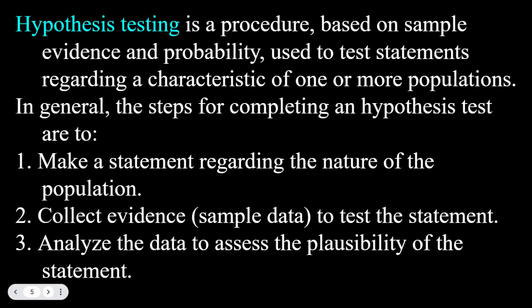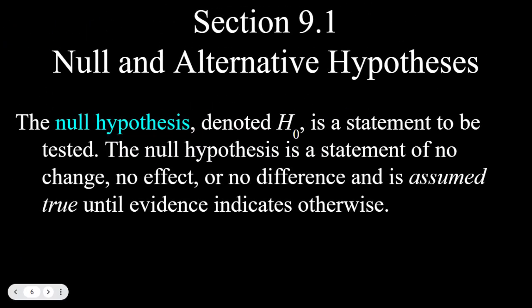The steps for completing a hypothesis test: Number one, we make our statement regarding the nature of the population, which involves two parts. Number two, we collect evidence — we gather sample data to test the statement. Number three, we analyze the data to assess the plausibility of the statement: does that statement make sense with the data we've gathered or not? After that introduction, we can begin section 9.1, talking about the null and the alternative hypotheses.